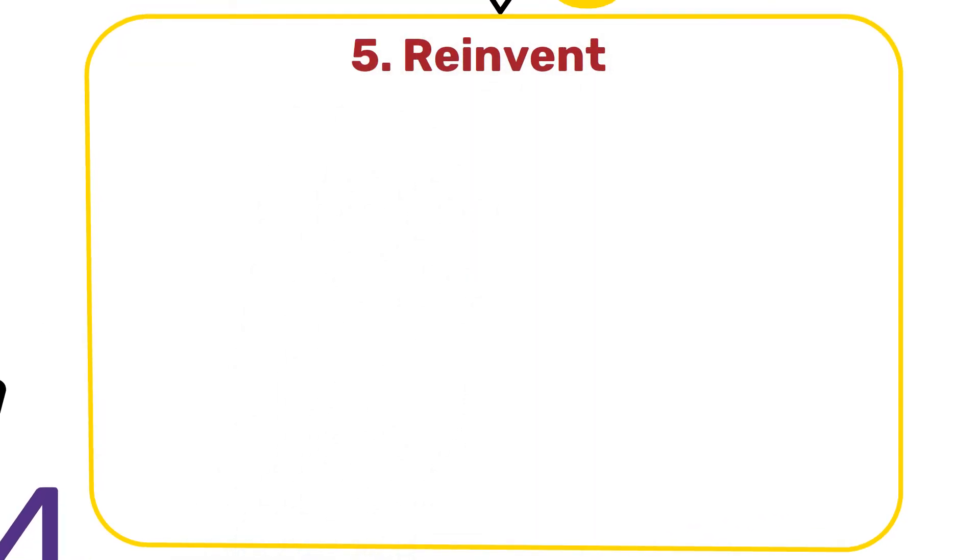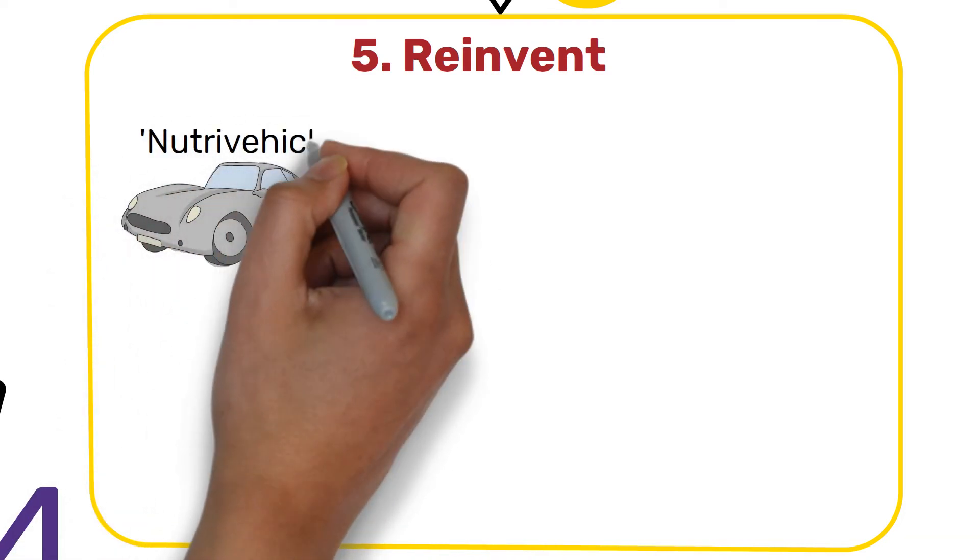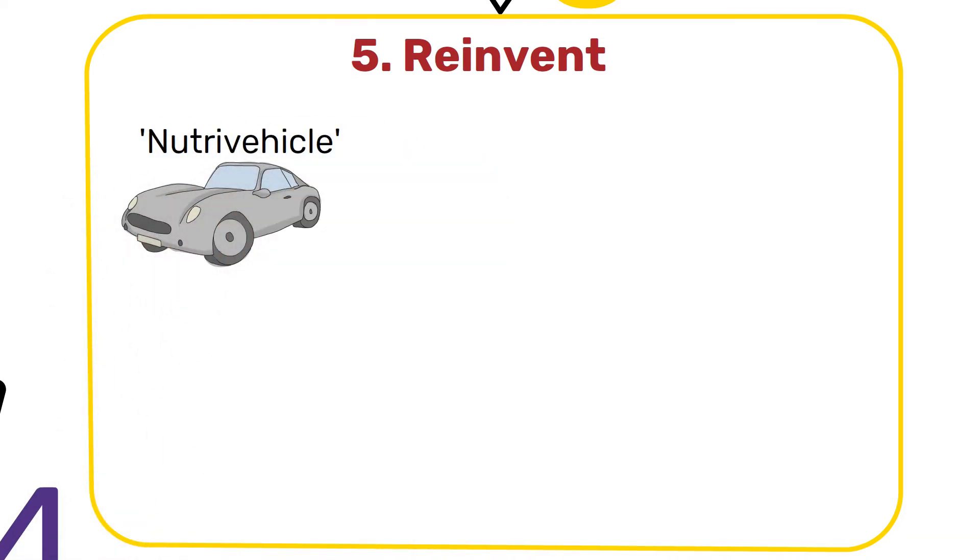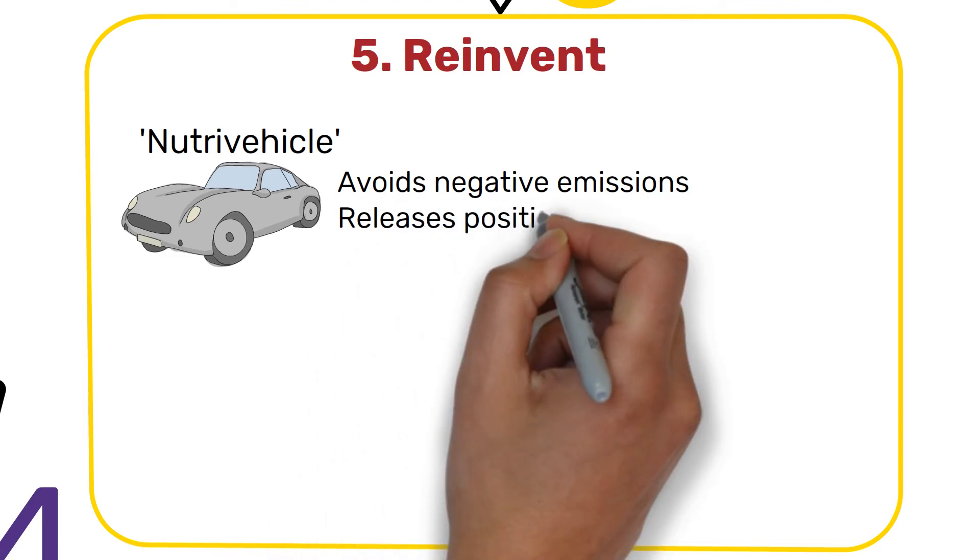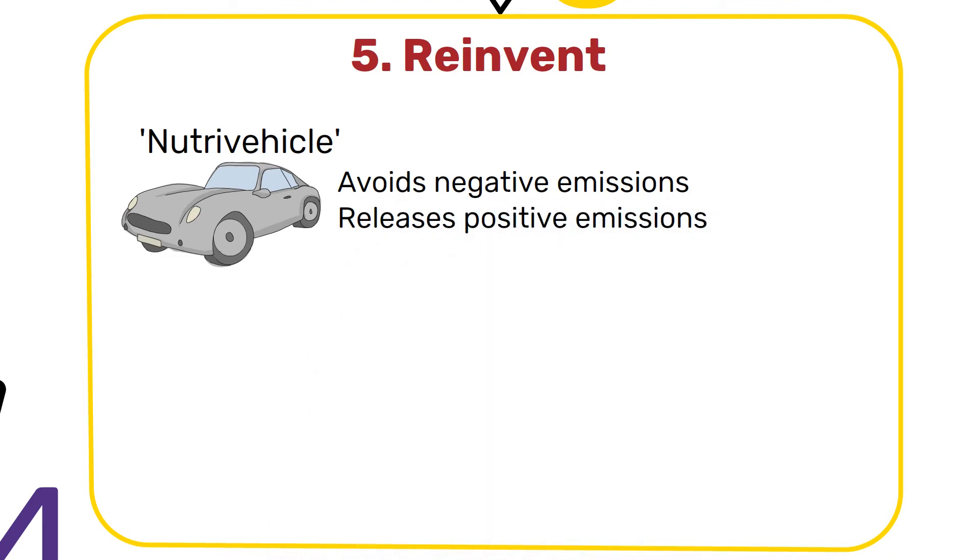Step 5: Reinvent. In this final step, we are doing more than designing for biological and technical cycles. We are recasting the design assignment. This means if we are designing a car, we don't just design a car but design a nutrivehicle. Instead of aiming to create cars with minimal or zero negative emissions, imagine cars designed to release positive emissions and generate other nutritious effects on the environment.